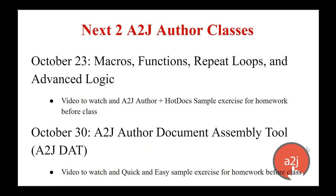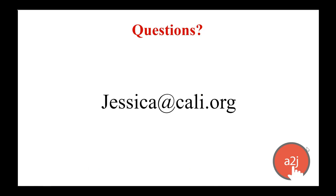The next two A to J Author classes in the 2019 online training series with LawHelp Interactive are October 3rd, which will cover macros, functions, repeat loops, and advanced logic, and October 30th, which will be the A to J document assembly tool — that's video 3 and video 4 in this series. If you aren't part of the 2019 training series and you're just watching these videos, you can just watch video 3 and video 4 after this one. If you have any questions, you can always reach out to me at jessica@cali.org. Thank you for watching video 2 and happy authoring!